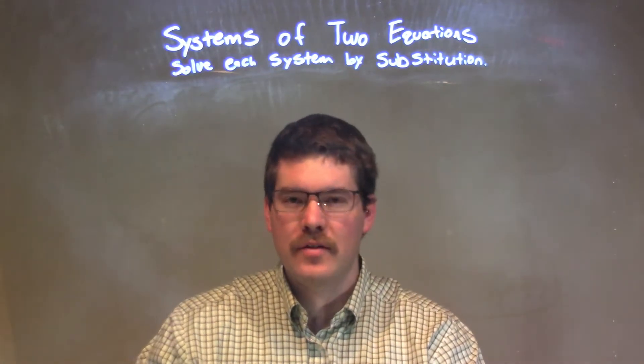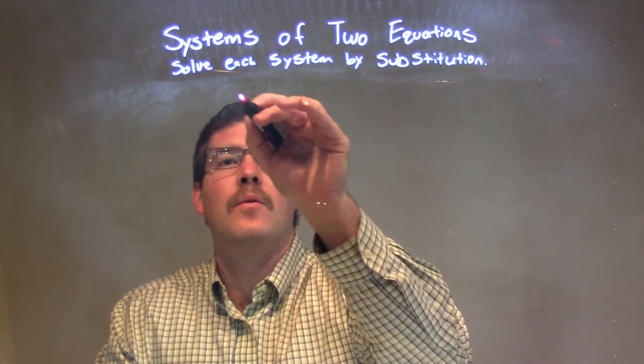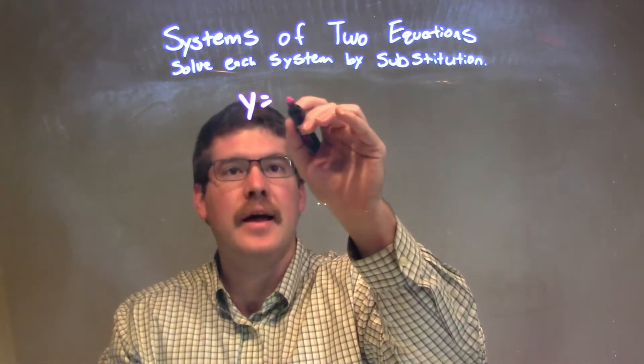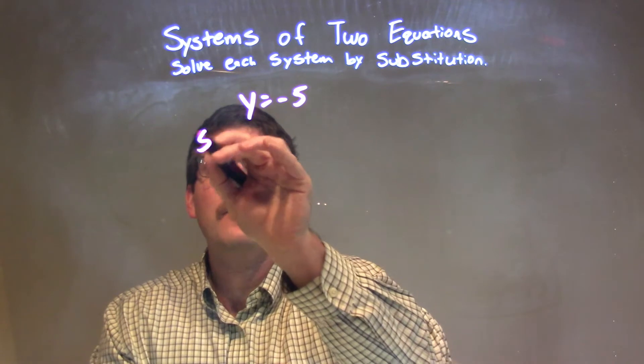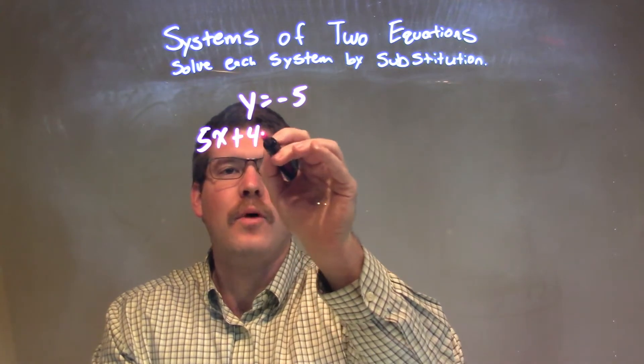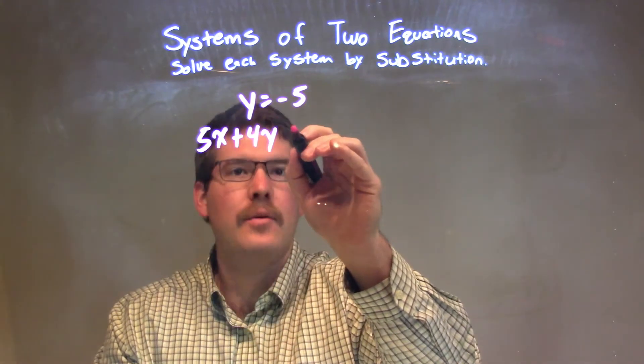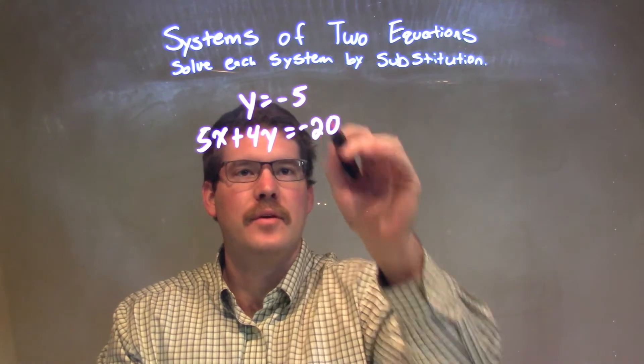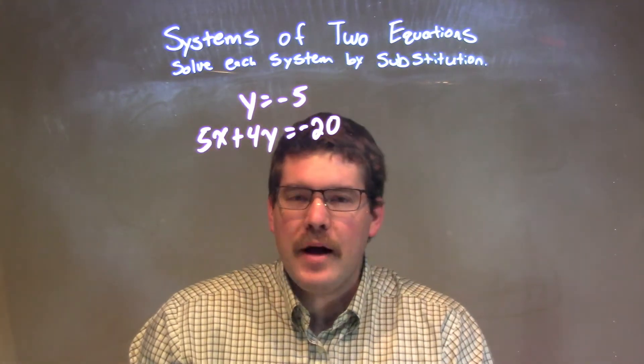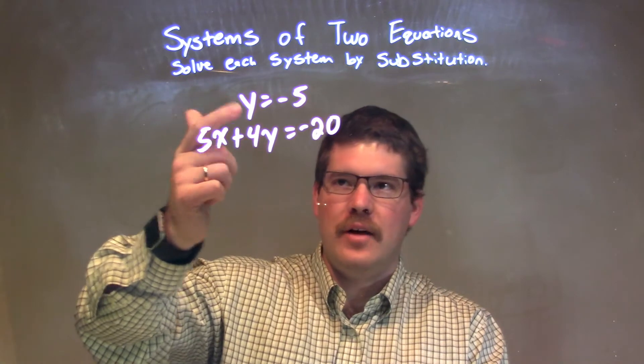So, if I was given the system of equations, y equals negative 5, and 5x plus 4y equals negative 20. Well, what I like about this already is I already have a variable by itself.